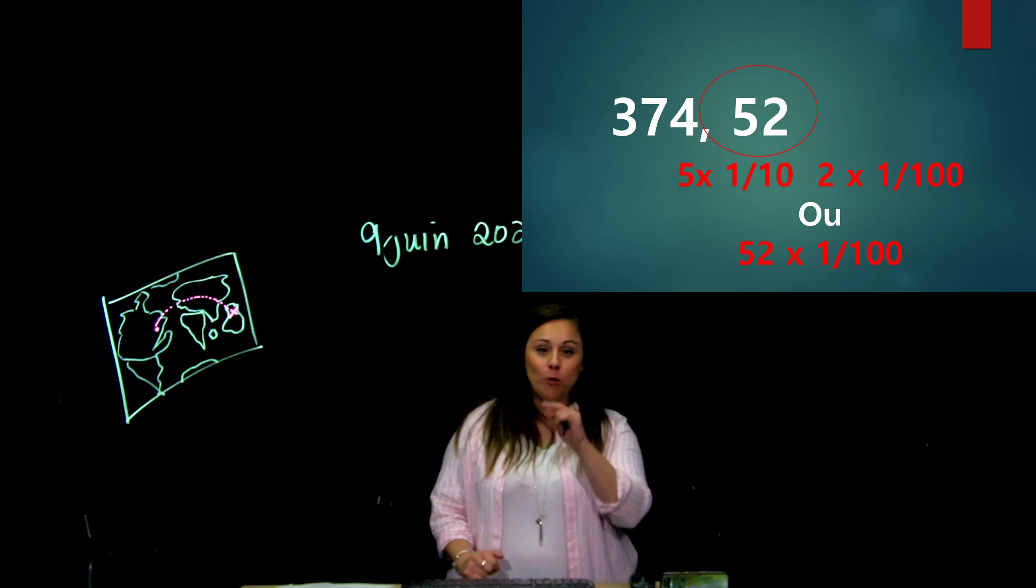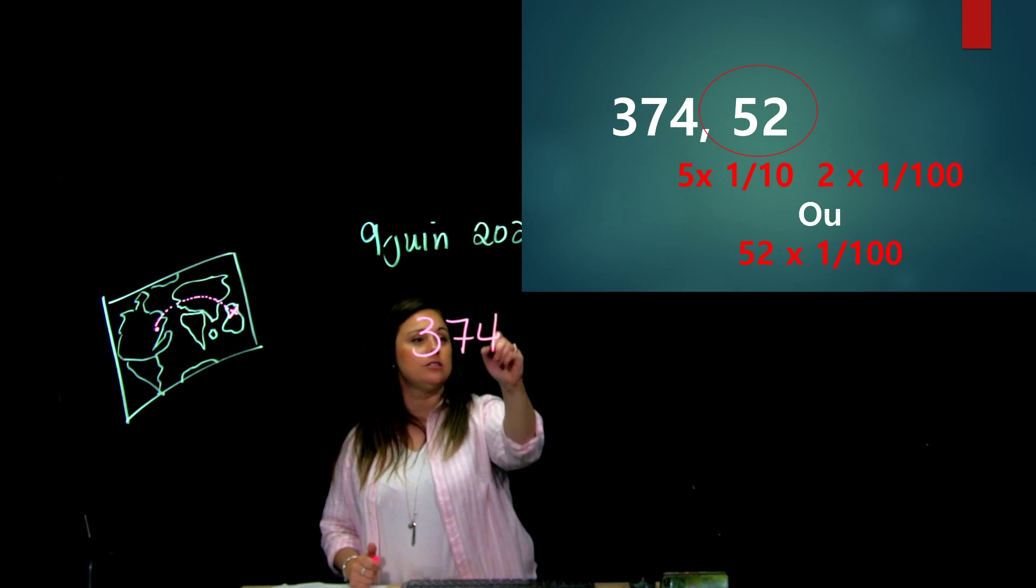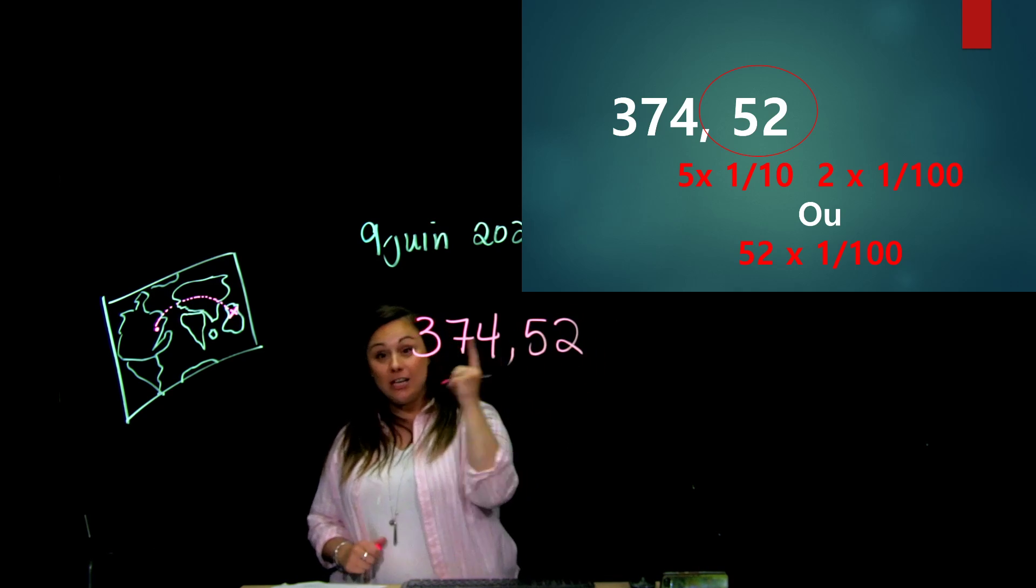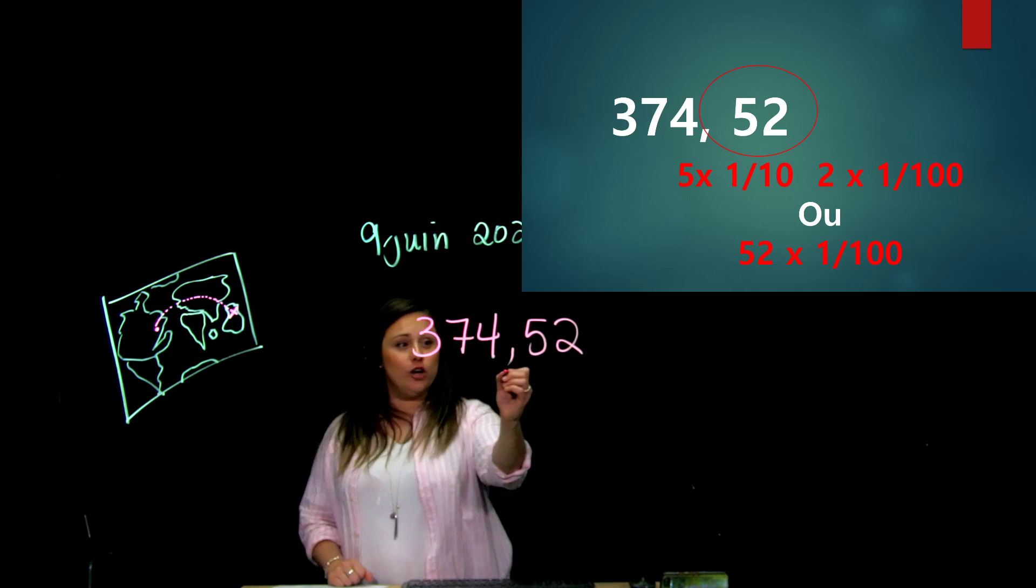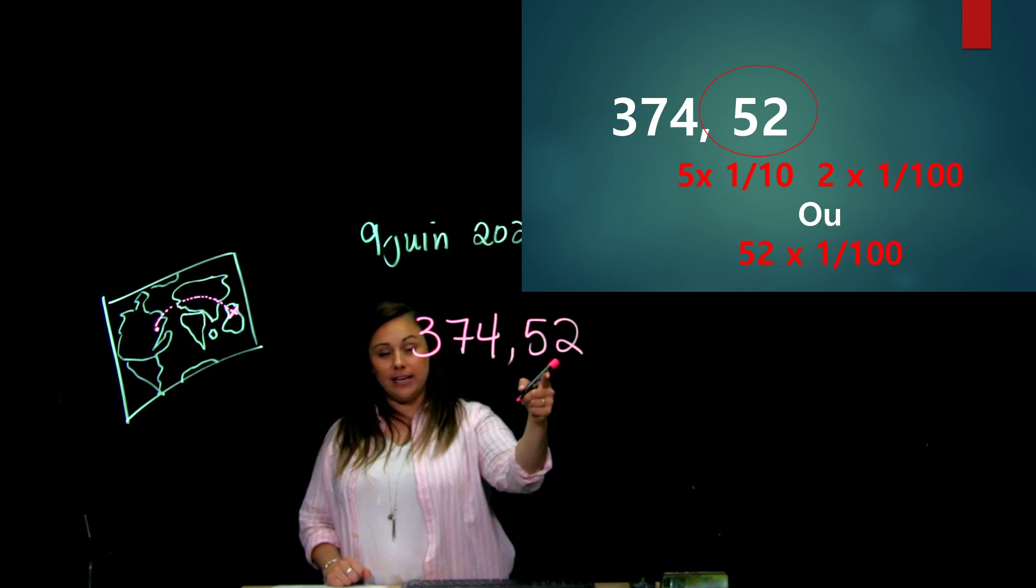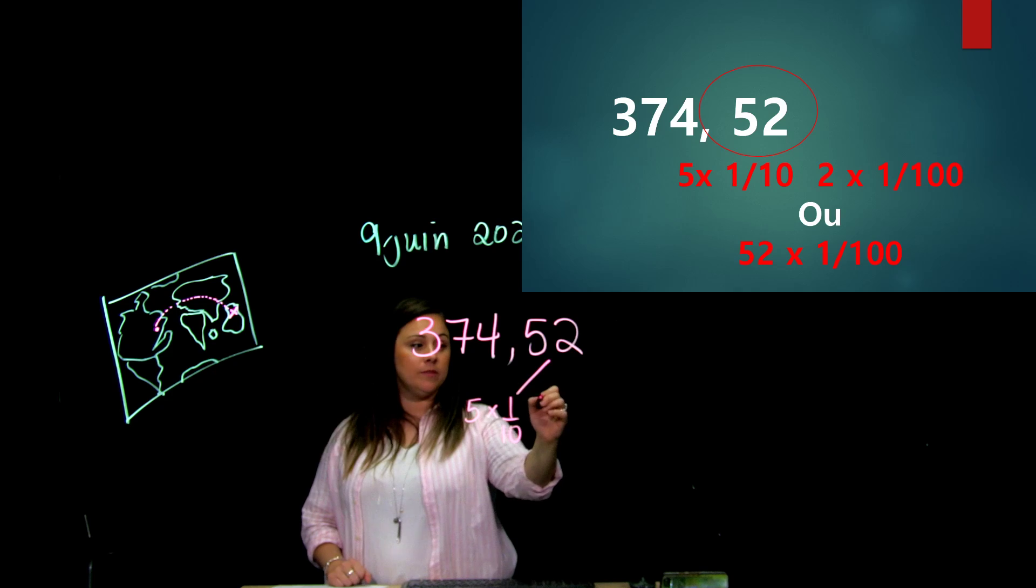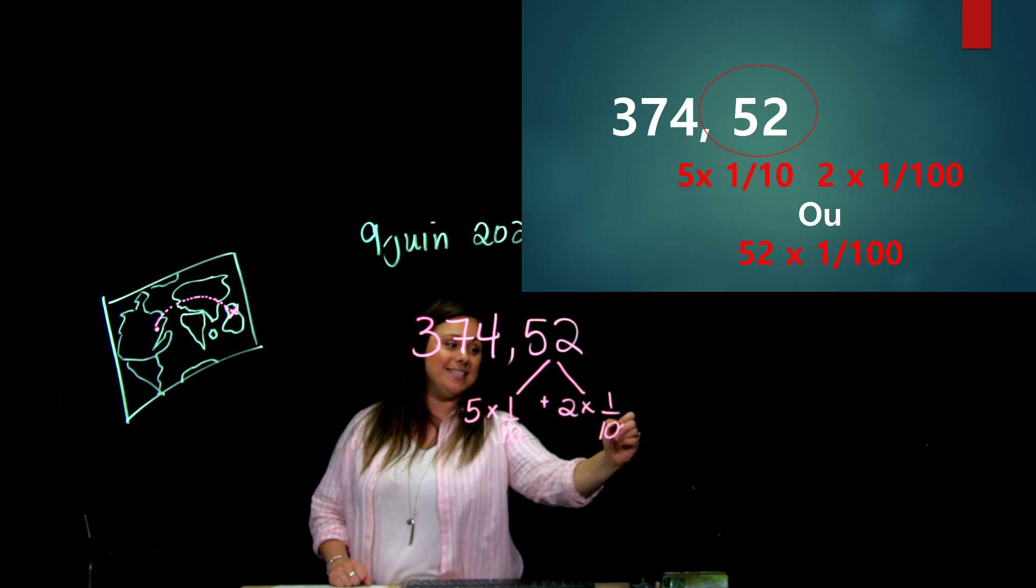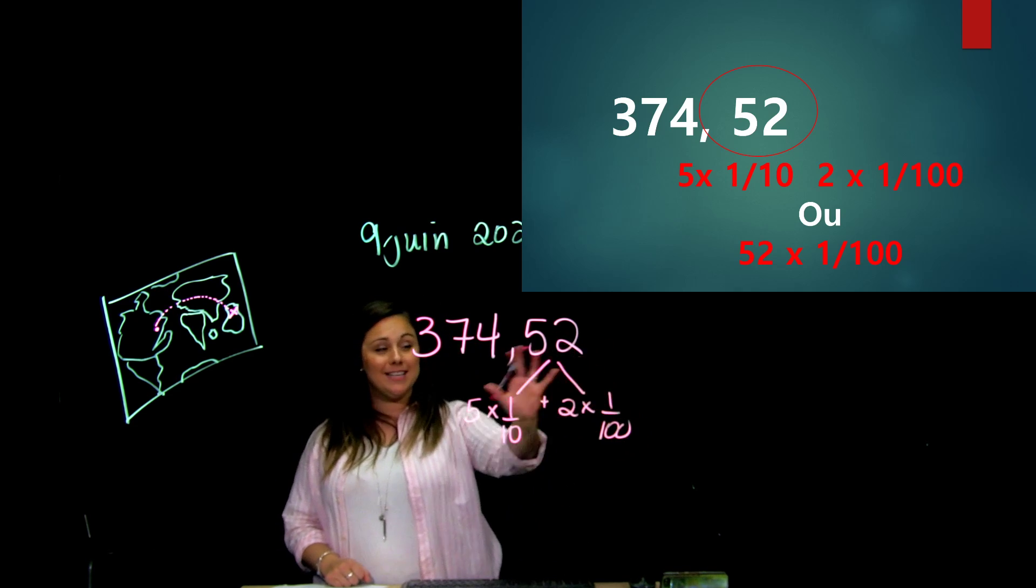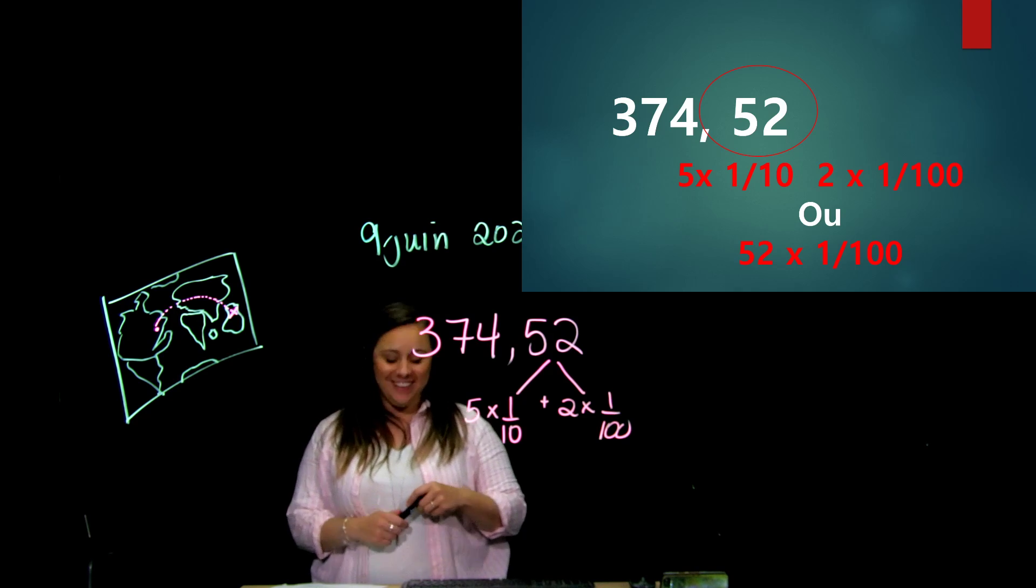Ici, on prend un nombre. Je prends le nombre 374 et 52 centièmes, parce que c'est comme ça qu'on dit ça. On ne dit pas virgule 52. 52 centièmes. Bien, tu dois savoir que le nombre décimal qui est ici, 0,52, c'est aussi, c'est comme si je disais que c'est 5 fois un dixième. Puis ici, c'est 2 fois un centième. C'est des centièmes ici que j'ai. Alors, je pourrais l'exprimer en fraction, cette partie-là.